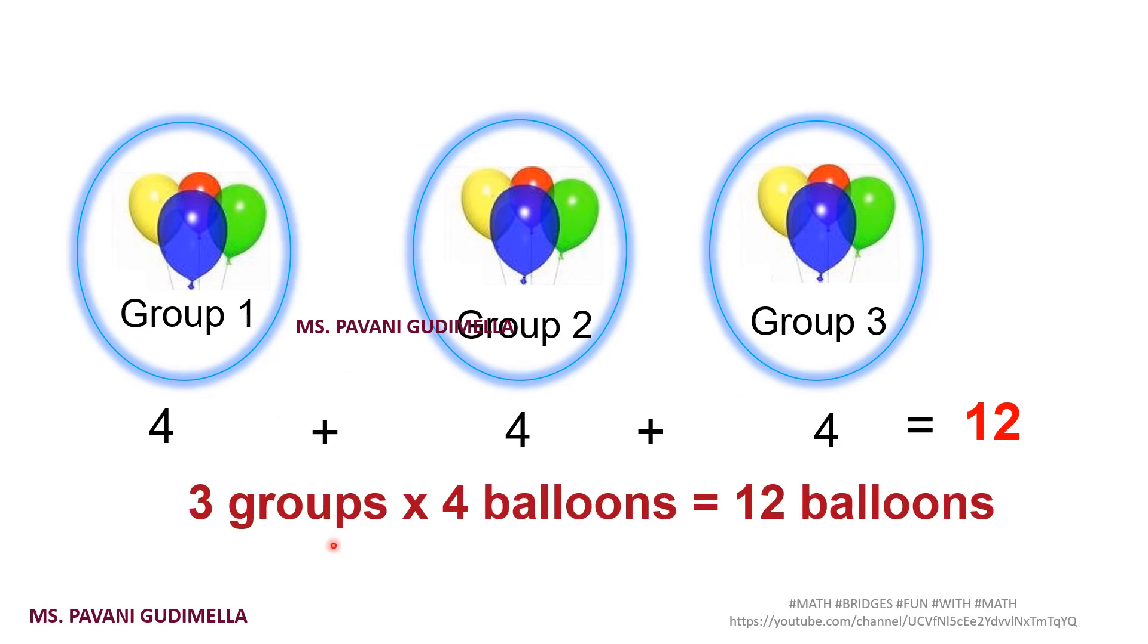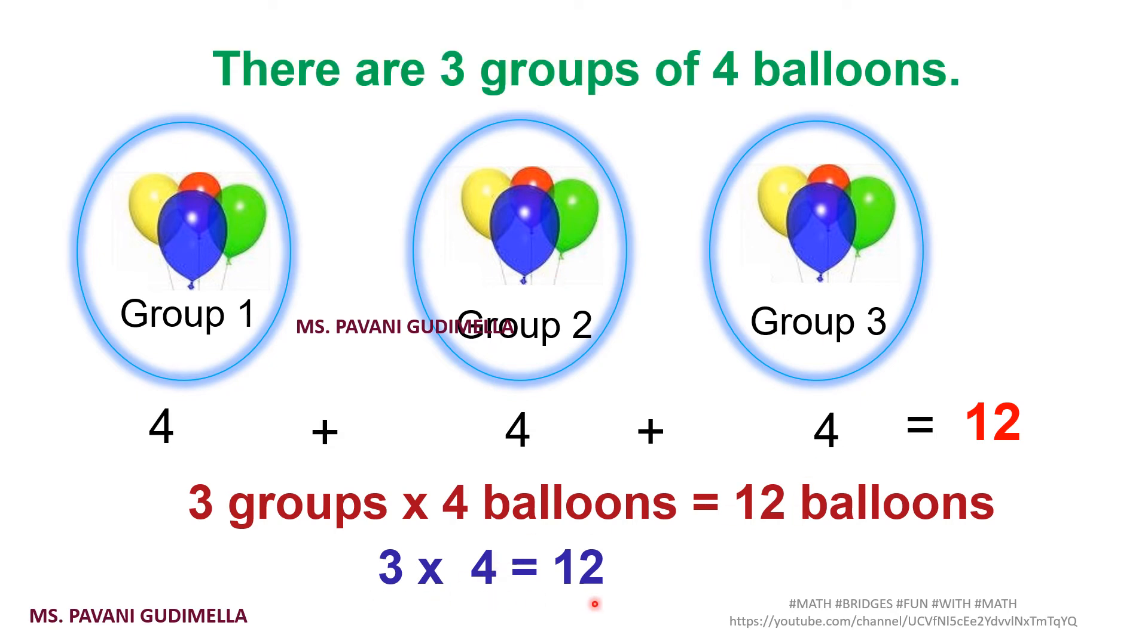How can we write this one? There are 3 groups, and in each group there are 4 balloons. That means we can write it mathematically as 3 into 4 equals 12. How do we read this? We will be reading it as 3 times 4 is repeated, means 3 times 4 balloons are repeated. 3 fours, so it is 12.